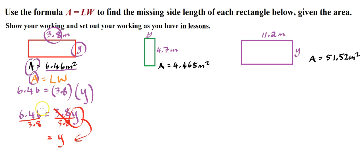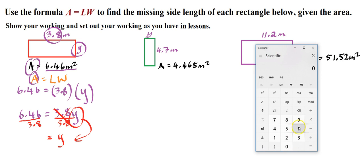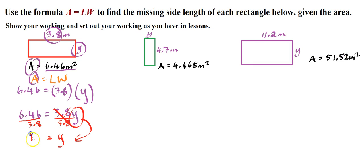And then 6.46 divided by 3.8. So we're allowed to use a calculator, so let's use it. So 6.46 divided by 3.8, 1.7. So that is the value of Y. For formatting sake, we really should rewrite this so that the variable is on the left and its value is on the right. What unit of measurement are we using? We're using meters. It's a measure of length, so it's not squared.